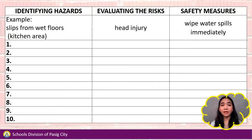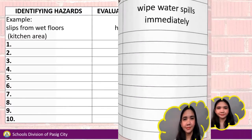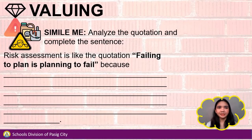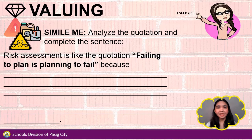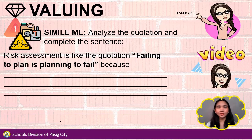For the valuing part, you will do a simile. Analyze the quotation and complete the sentence: 'Risk assessment is like the quotation — Failing to plan is planning to fail, because...' Pause the video and work on your activity, and play the video when you're done.